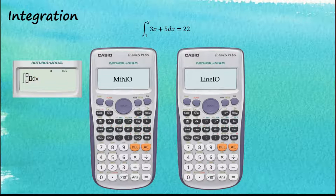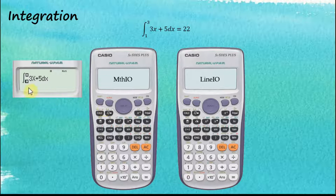We should input the function first: three alpha x plus five. Then we navigate to the second subcontainer using the right arrow key. We are now in that subcontainer — the lower limit is one. Using the right arrow key again takes us to the third subcontainer, the upper limit, which is three. Press equal and we get the answer.